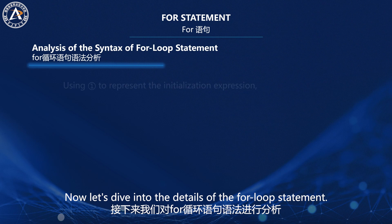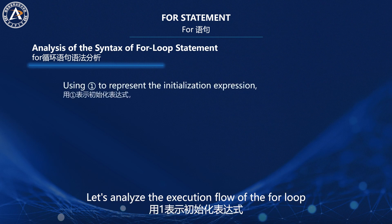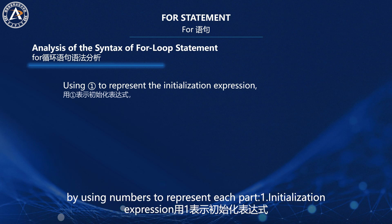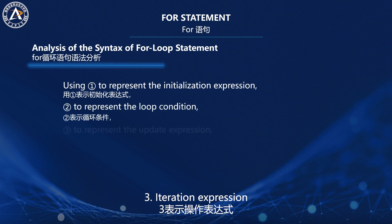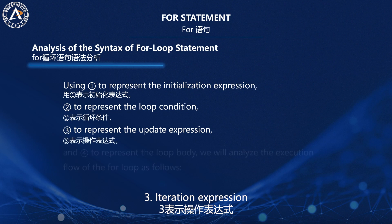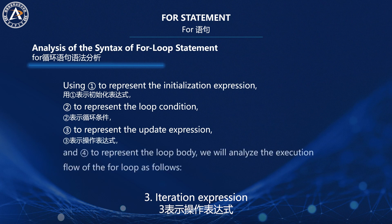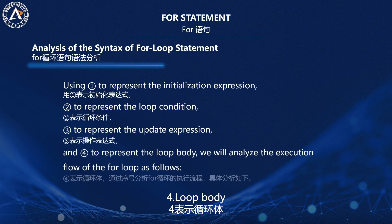Now let's dive into the details of the for loop statement. Let's analyze the execution flow of the for loop by using numbers to represent each part. First, initialization expression. Second, loop condition. Third, iteration expression. Fourth, loop body.